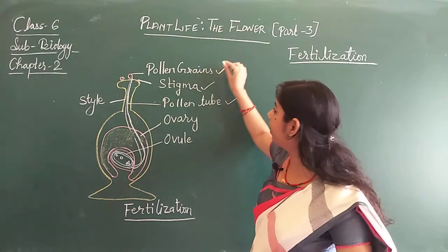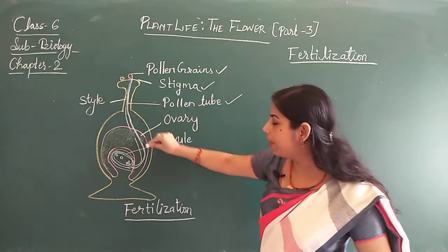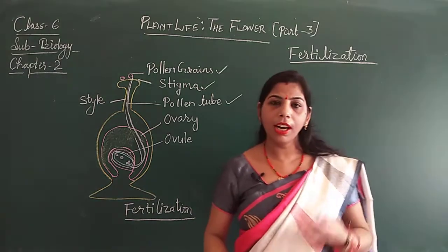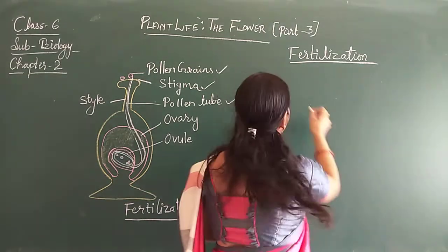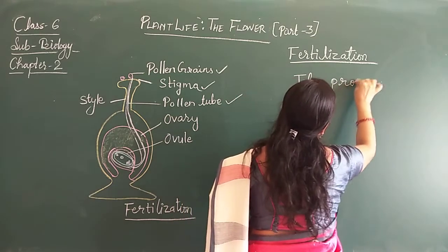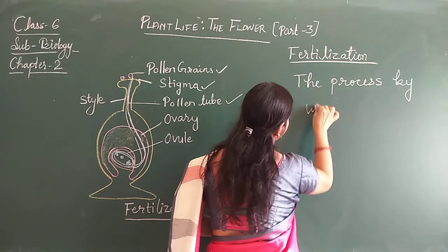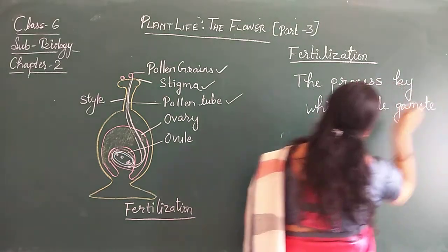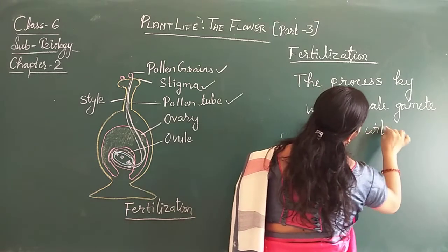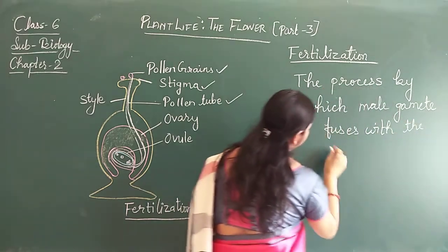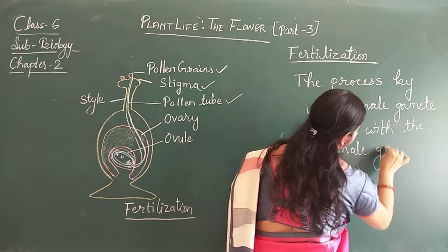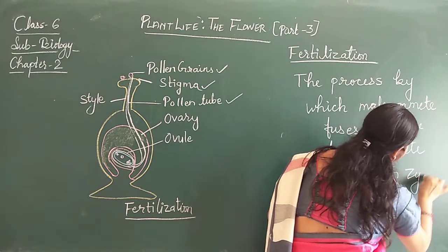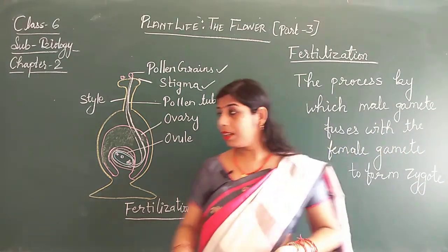That means when the male gamete grows, it goes through the pollen tube and reaches the ovary. Then it fuses with the female gamete and forms the zygote. This process is called fertilization. I am going to write the definition here: the process by which the male gamete fuses with the female gamete to form a zygote.